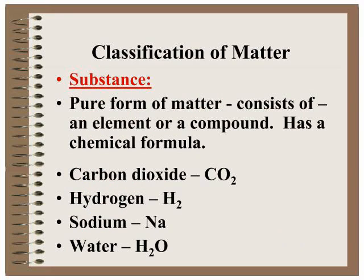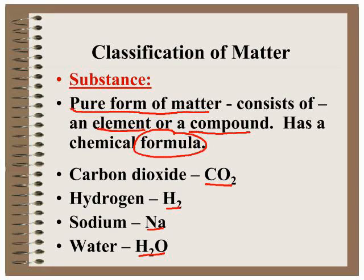A substance is a pure form of matter, which is why we sometimes call it a pure substance. It consists of either an element or a compound and it has a chemical formula. So if you can write a chemical formula that describes that matter, it is a substance.